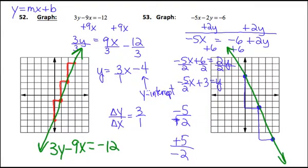And that green line, which represents a negative 5x minus 2y equals the negative 6.